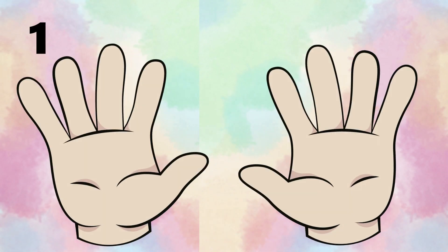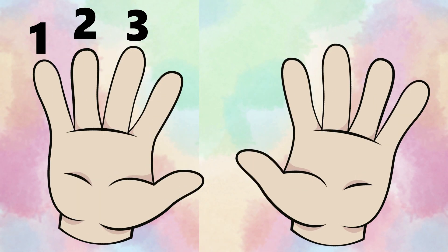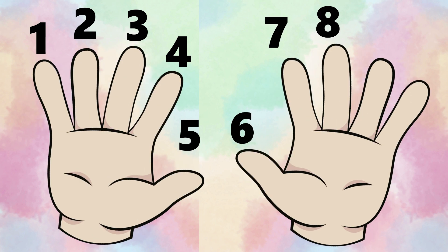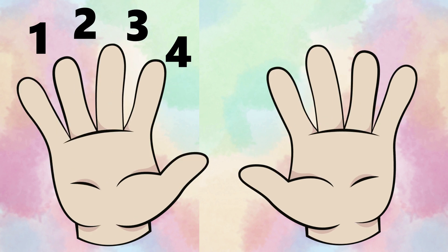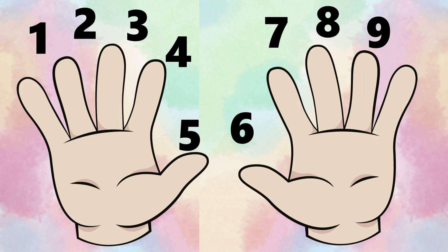1 little, 2 little, 3 little fingers, 4 little, 5 little, 6 little fingers, 7 little, 8 little, 9 little fingers, 10 little fingers on my hand. 1 little, 2 little, 3 little fingers, 4 little, 5 little, 6 little fingers, 7 little, 8 little, 9 little fingers, 10 little fingers on my hand.